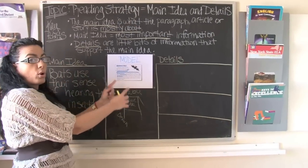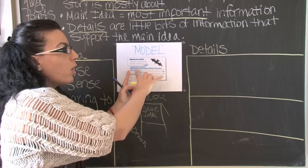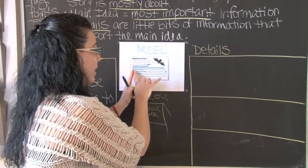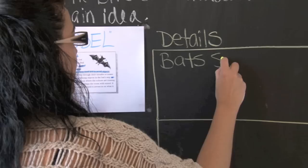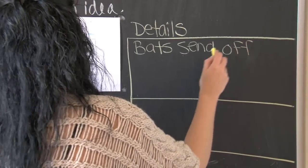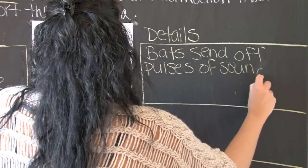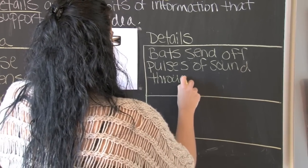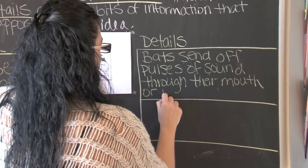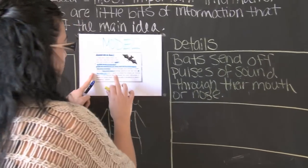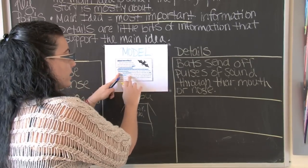Now, we need to find three details that support the main idea. It's always important, boys and girls, that when you look for the surrounding text details, it will always be following the main idea. So let's go back here. Bats send off pulses of sounds. That's one detail. Bats send off pulses of sounds through their mouth or nose. That's one detail. Taking a look at the model again, I'm pulling it straight from the text. Remember, text support. That's why it's important we use our highlighter.